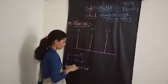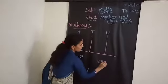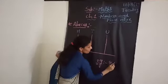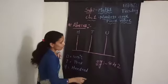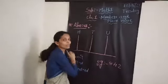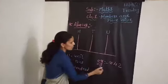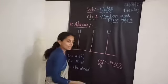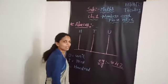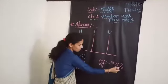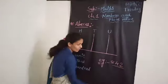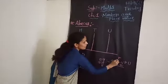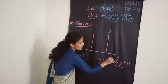Now let's take one example. We will take the number 842. It's a three-digit number. In first standard you learn up to two-digit numbers, so in second standard we learn up to three-digit numbers. Here in 842, 2 is in the Units place, 4 is in the Tens place, and 8 is in the Hundreds place.